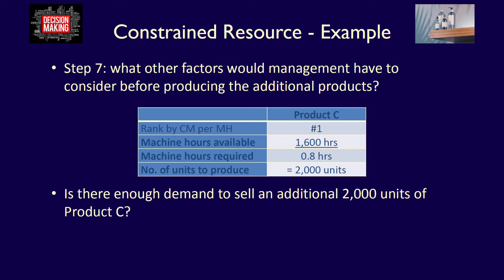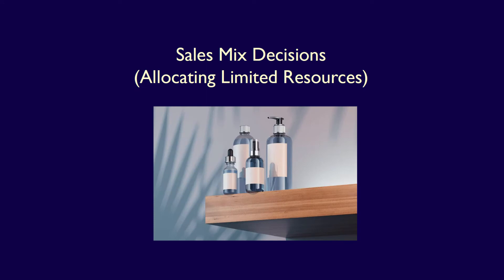Management must consider whether there is enough demand in the market to sell the additional 2,000 units of product C. If there is no demand for additional units of product C, management would then consider producing product A — the next most profitable product — or product B if there is no demand for product A either. Although profitability per constrained resource is an important deciding factor, in the end, demand is the final deciding factor. We have walked through the steps to determine which product is most profitable with no constrained resources using contribution margin per unit, and which products are most profitable with a constrained resource using contribution margin per unit of limited resource.